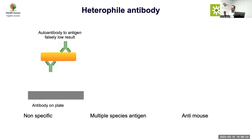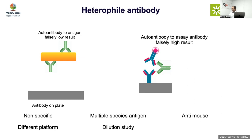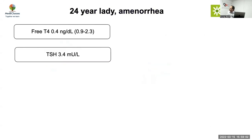Heterophile antibodies can cause both falsely low and falsely high results. If the antibody binds and removes the antigen, you get a falsely low reading; if it bridges the capture and signal antibodies, the level appears falsely high. For example, in some labs TSH appeared very low, while in another lab it was over 100 — caused by heterophile antibody interference. Changing the assay platform, dilution studies, or using anti-heterophile antibody reagents can help resolve this.